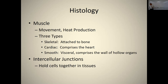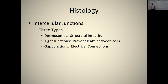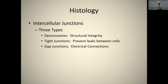Intracellular junctions hold cells together in tissue and sometimes allow communication between cells. There are three types: desmosomes provide structural integrity, like spot welds holding cells together so they don't come apart during movement. Tight junctions prevent leaks between cells, ensuring that absorption and secretion goes through cells rather than between them. Gap junctions are electrical connections between cells that allow electrical information to travel directly from one cell to the next — best found in the heart and also in the central nervous system, where they are called electrical synapses.